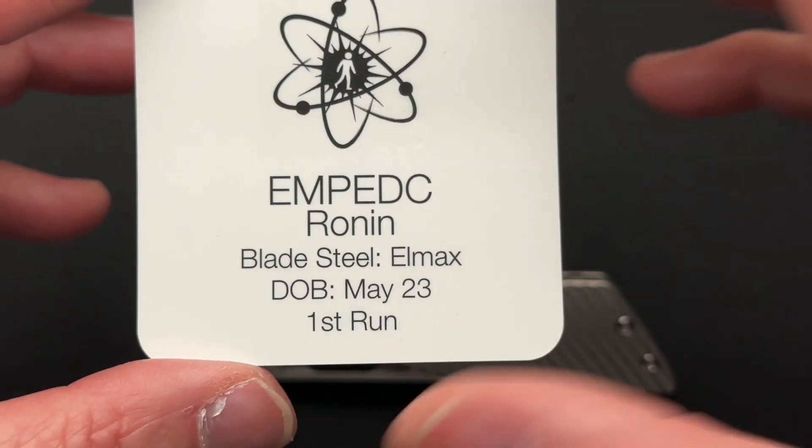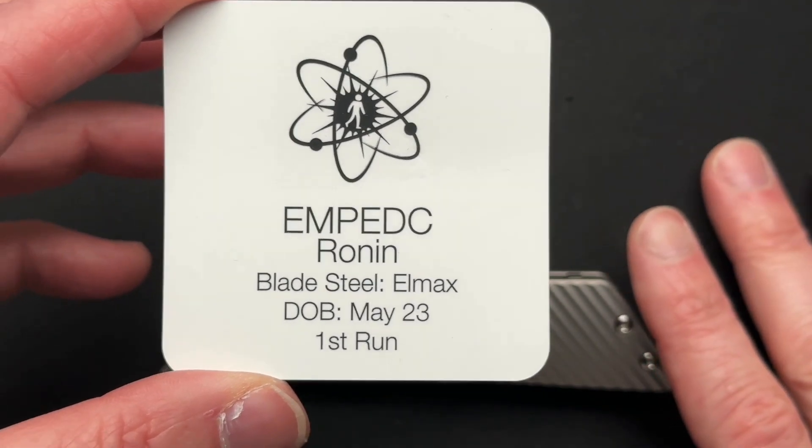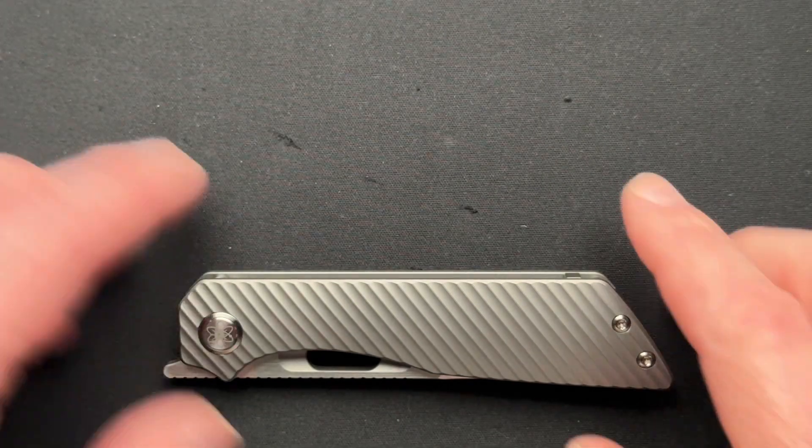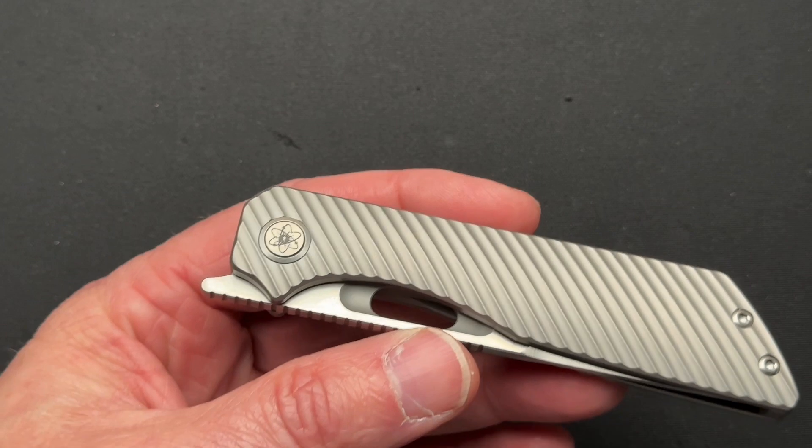Again, this is the Ronin. This particular one is LMAX made in May of 2023. And this is the first run, which is exciting. That's one of the reasons why Ozzie Mike bought it, because it is a first run.